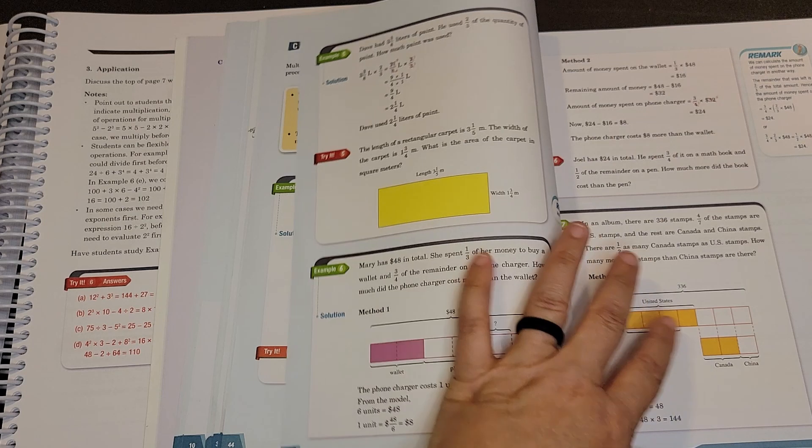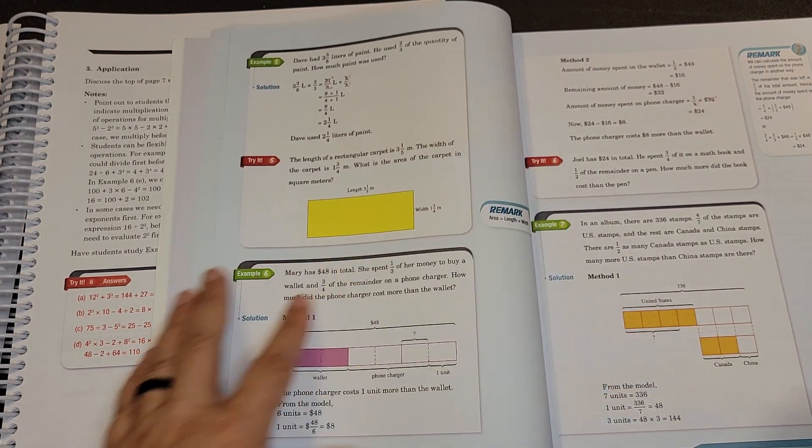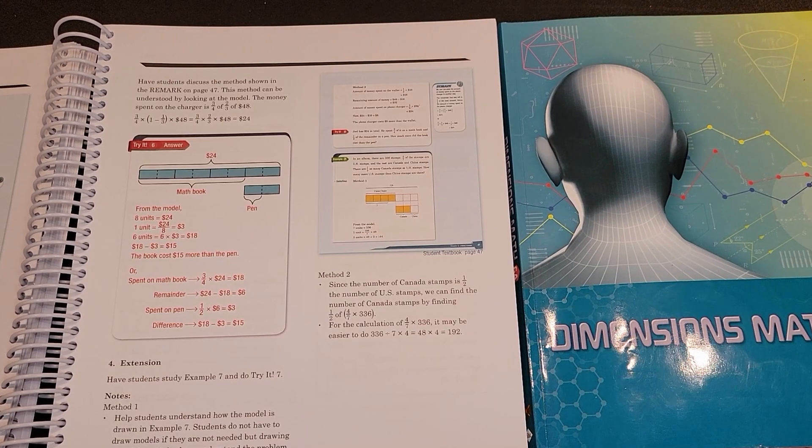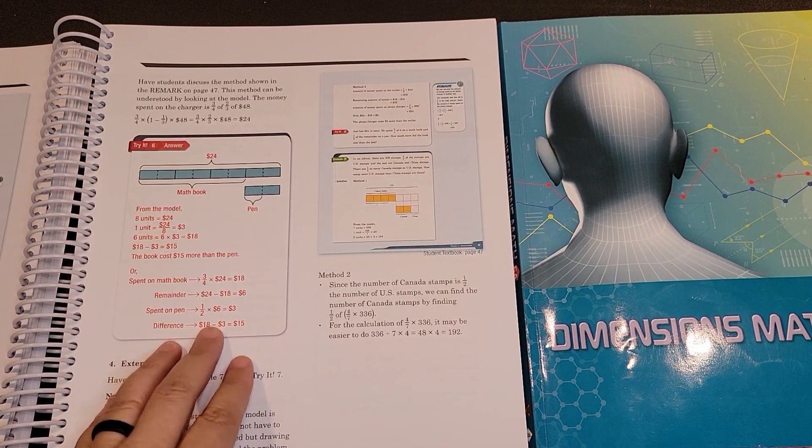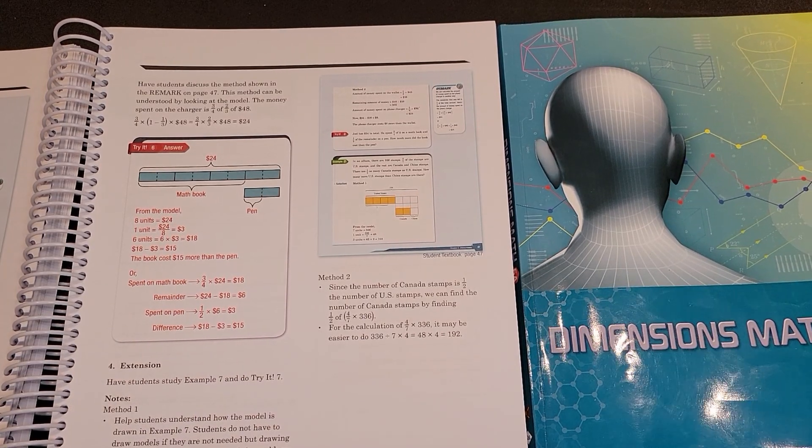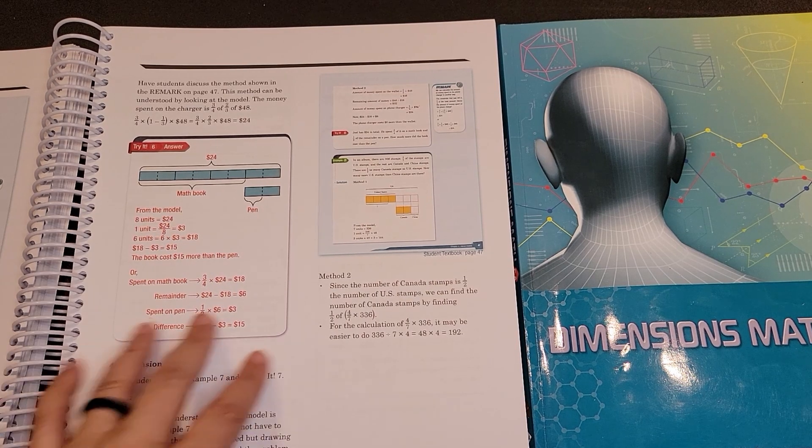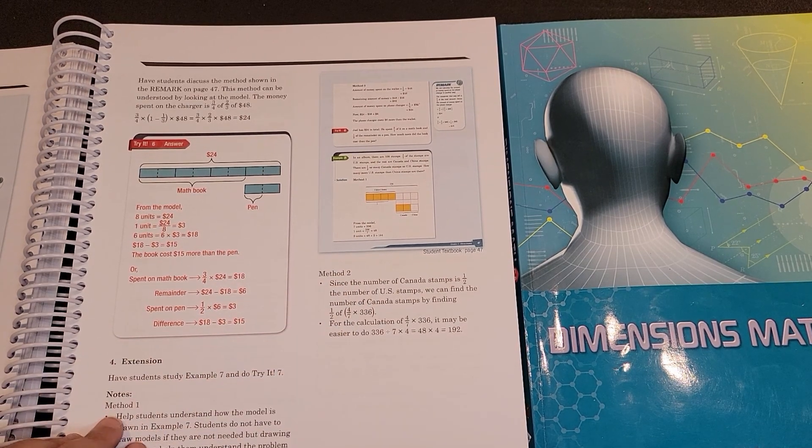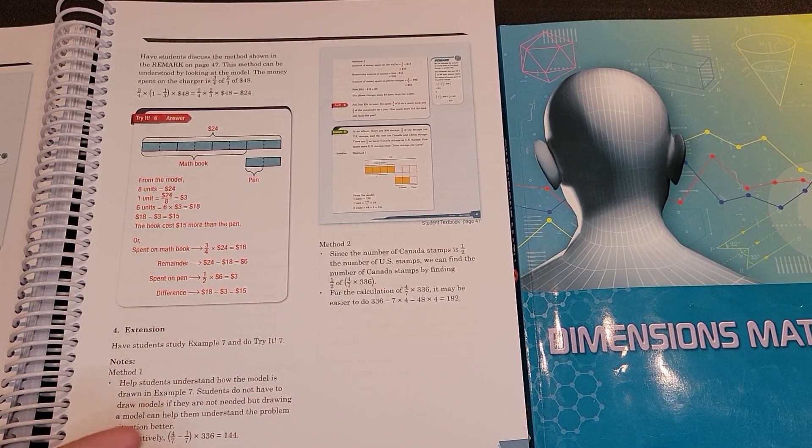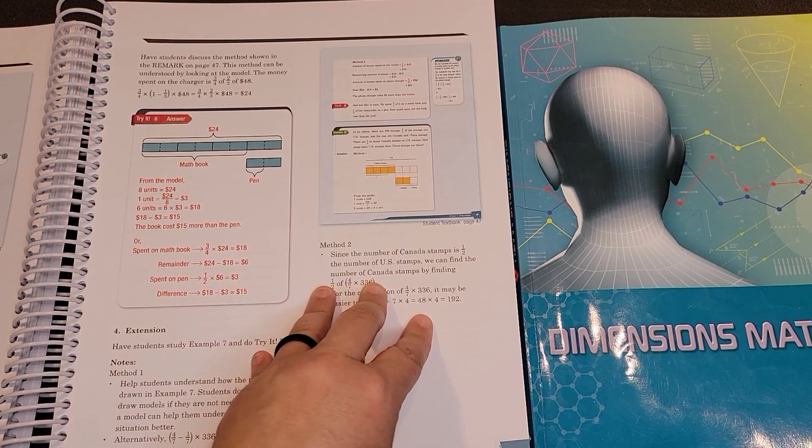And then once you have completed the examples there are these try it sections. In your teacher's guide you'll see that you have the answers to the try it questions and quite a few times they will give you multiple ways to solve the problems. And so that is very nice. You can see that there's a method two here and method one. So I really do appreciate the multiple ways to solve the individual problems.